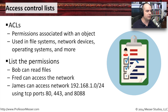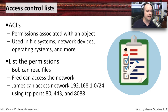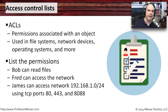For instance, this is how you do an access control list — listing out permissions of a file. In this access control list, Bob can read the files, Fred can access the network, and James can access the network 192.168.1.0/24 using TCP ports 80, 443, and 8088.